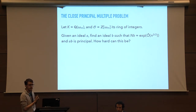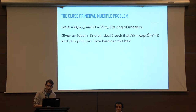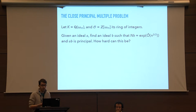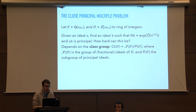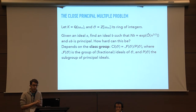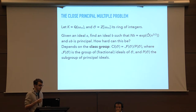Let's fix the notation. Let K be the cyclotomic field of conductor M, and O its ring of integers. We are given an ideal A in this ring of integers, and we are looking for an ideal B of small norm such that the product AB is principal. The difficulty will be related to the size of the class group. The class group is the group of fractional ideals: if you have two ideals, you can multiply them to obtain another ideal, and we consider fractional ideals to get inverses. A subgroup is generated by principal ideals, denoted P(O), and the quotient is the class group — a finite abelian group.